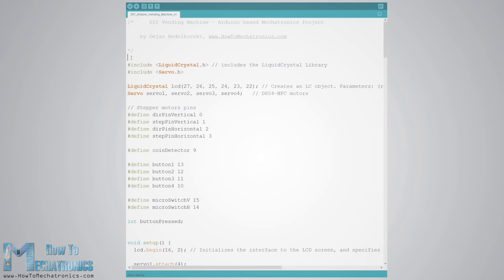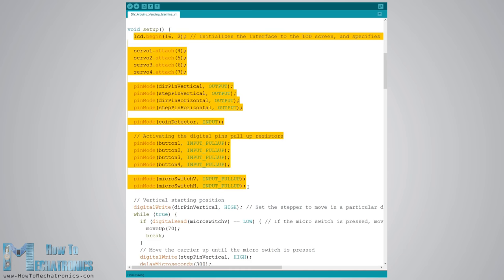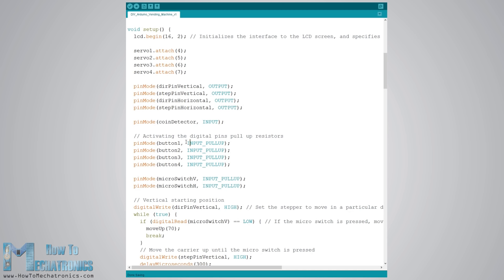What's left now is to program the Arduino and here's the code that I made for this project. First we need to include the servo and the liquid crystal libraries, define the LCD pins, the 4 servo motors, the stepper motor pins, the coin detector as well as the 4 buttons and the 2 micro switches. In the setup section we set the pin modes for each of the mentioned pins above. We can note that for the buttons and the micro switches pins we activated the internal pull up resistors. This means that the logic level at these pins will be high all the time and once we press them the logic level will drop to low.